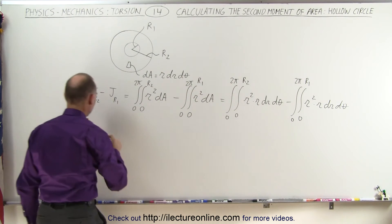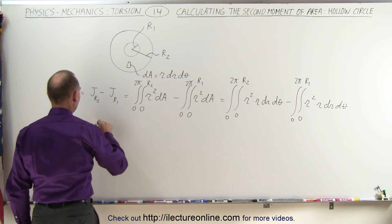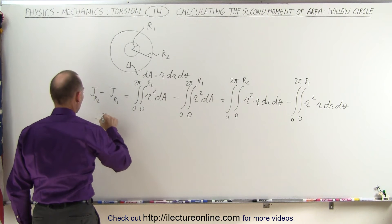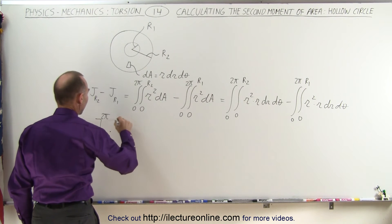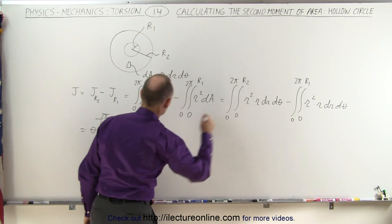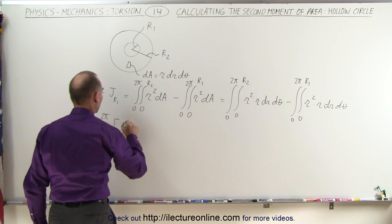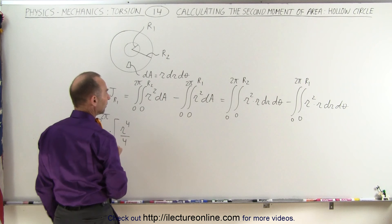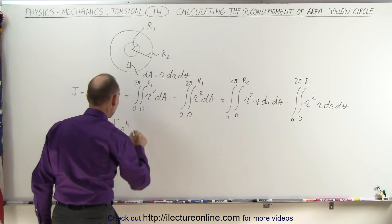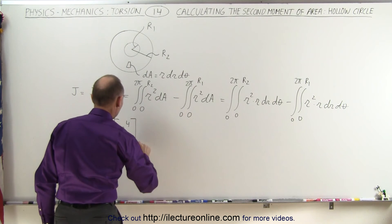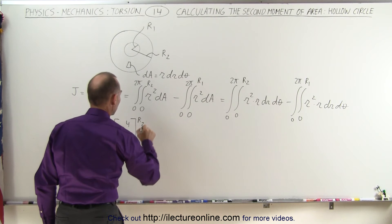when we integrate the angle d theta, we get theta evaluated from 0 to 2 pi, and then we multiply that times the integral. When we do the R cubed, we end up with R to the fourth over 4